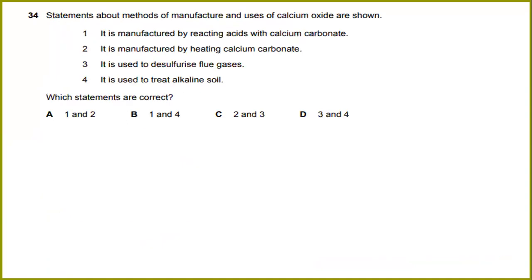Statements about methods of manufacture and uses of calcium oxide are shown. It is manufactured by reacting acid with calcium carbonate. It is manufactured by heating calcium carbonate, yes. And it is used to desulfurize flue gases, yes. And it is used to treat alkaline soil. The answer would be 2 and 3.